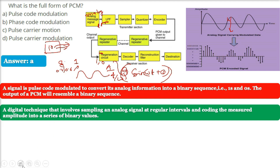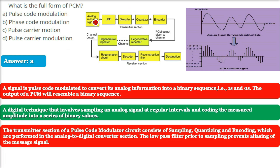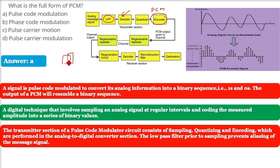In the transmitter section of a PCM system, the circuit consists of: first, sampling; then quantizing; and then encoding — all performed in the analog-to-digital converter section. A low-pass filter prevents aliasing of the message signal. Aliasing is like a glitch that can occur — for example, a blur when taking a picture while moving — and the low-pass filter removes this effect.